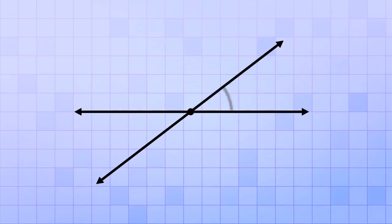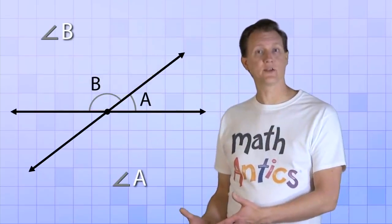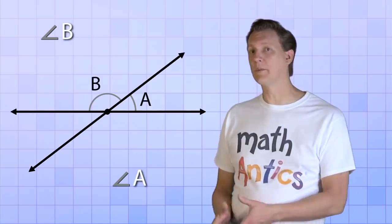if we shrink down that arc so that it's close to the intersection point, and then put a letter by it, like the letter A, we have another way of showing an angle, angle A. And we can do this with any angle. So the angle up here, we can also draw an arc and call it angle B. So whenever you see a letter next to a little arc like this, it means that it's the name of the angle formed by that arc.